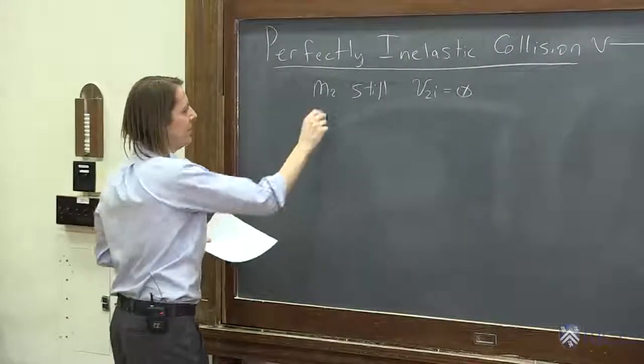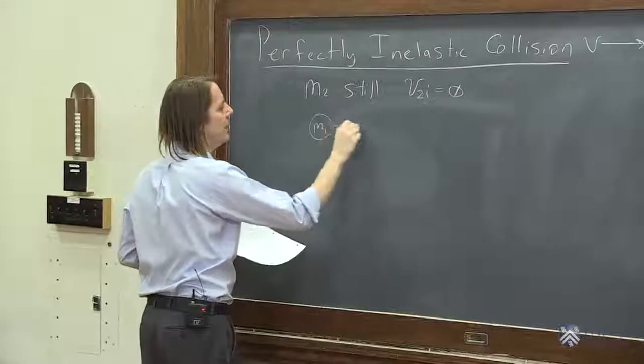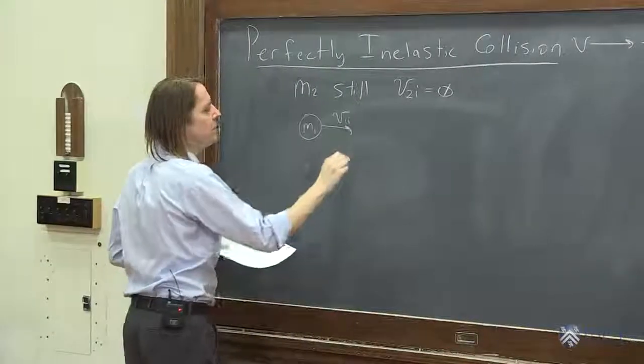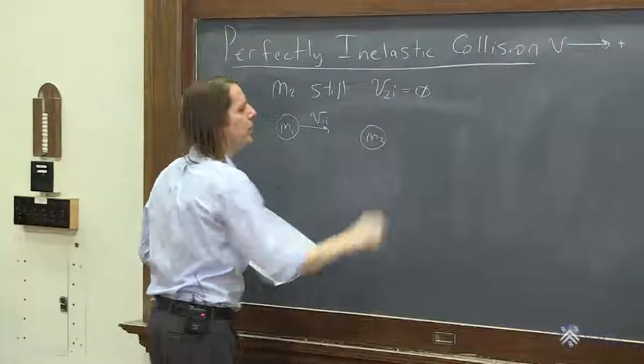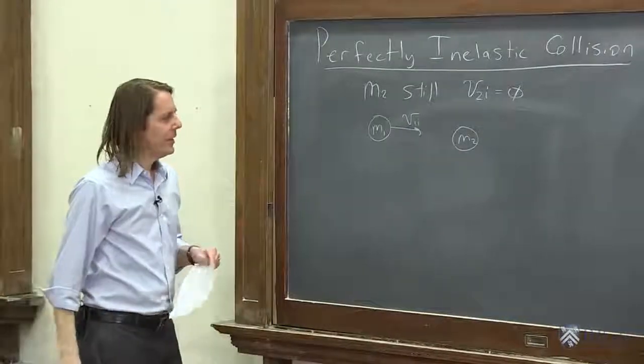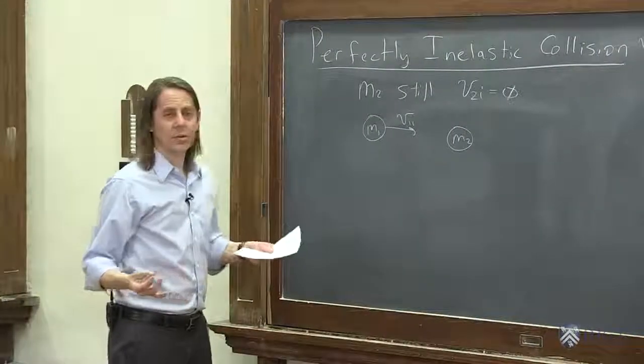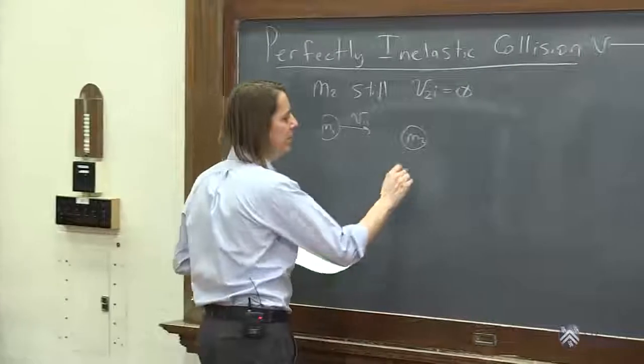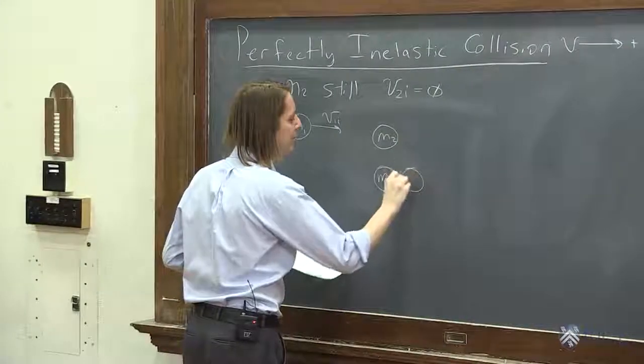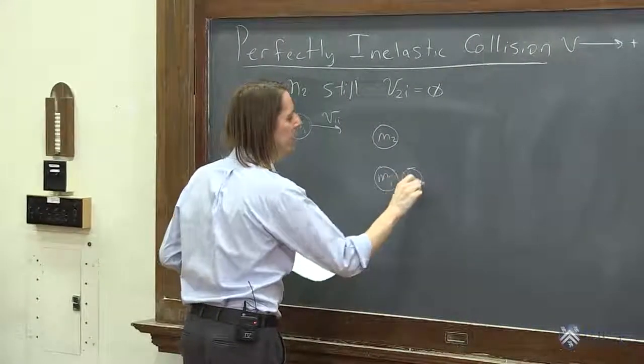So let's see. We would start then like this. So here's M1, and it has V1 initial. And here's M2, and it's just sitting there. And then the question is, in the end, what do we get? We have M1 and M2. How are they moving?